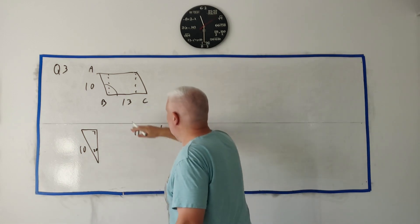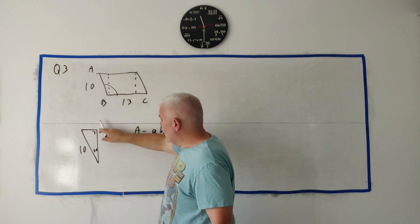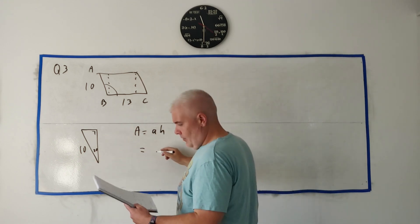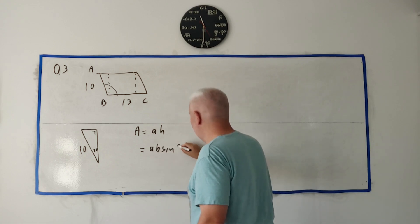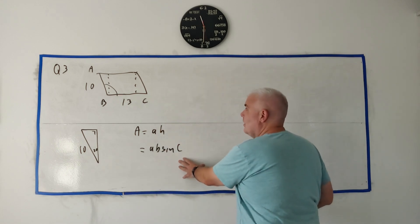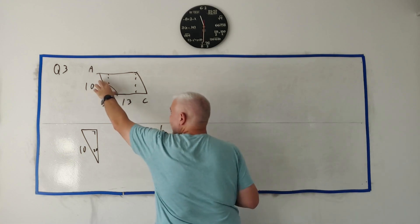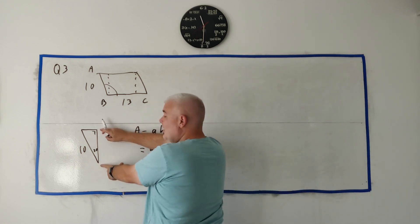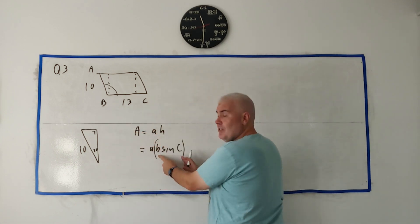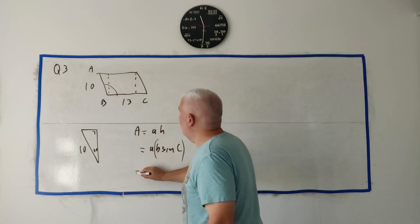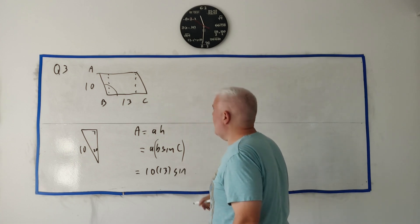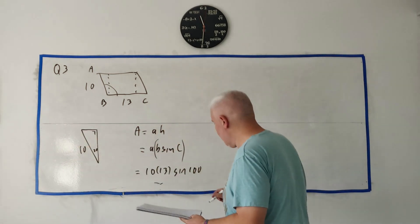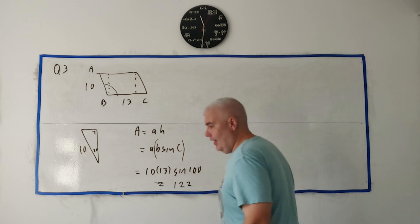The formula is: area equals the base times the height. You don't have the height directly, but you could find it. There's another formula — it's just from the triangle: it's a·b·sin(C), that's a side, a side, and the angle in between, which they have given you. Using that formula: 10 times 13 times sin(110°), put all that into a calculator, and to the nearest centimetre squared it equals 122. That's the answer to Part A.